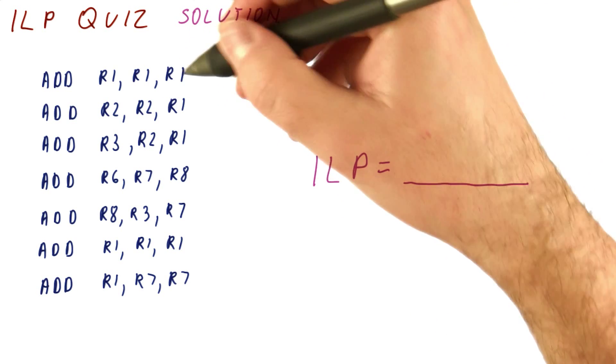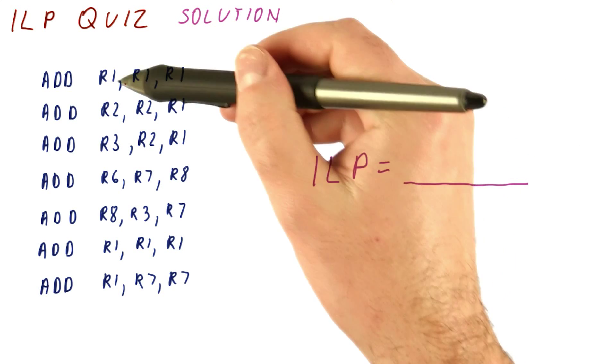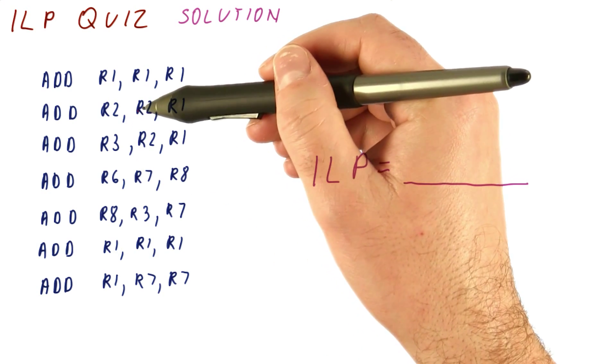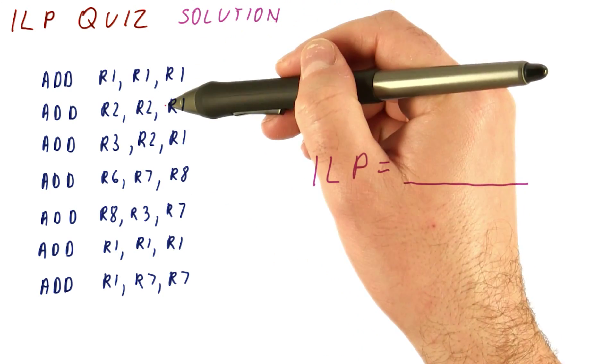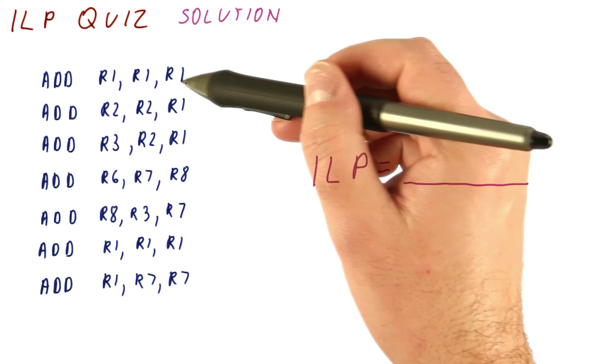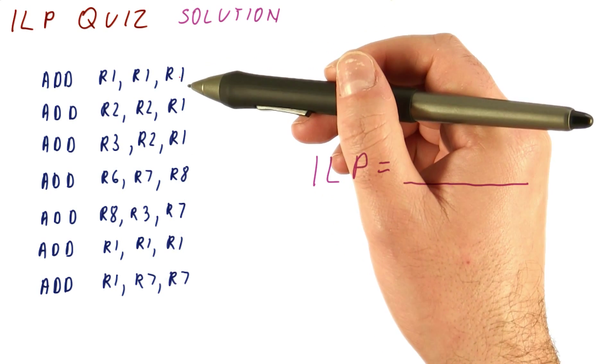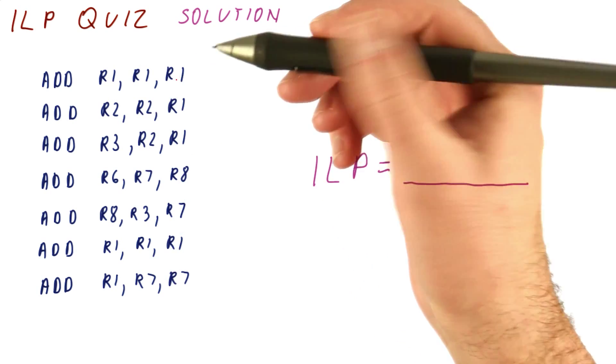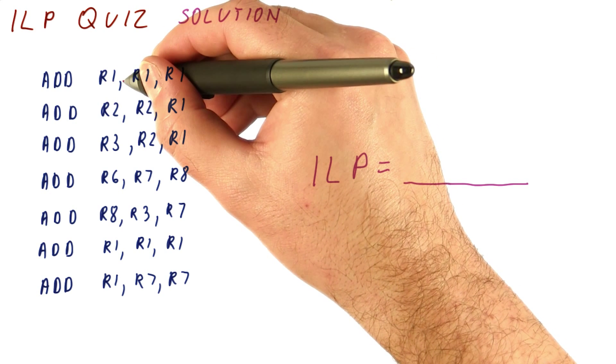As we said before, we have to figure out the dependencies. Even though this program has output and anti-dependencies, for ILP all we care about is the true dependencies. We could rename this program and get just the true dependencies, or we could just look at where the true dependencies are here.